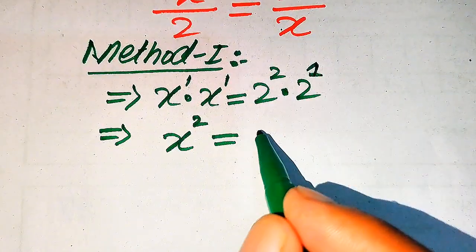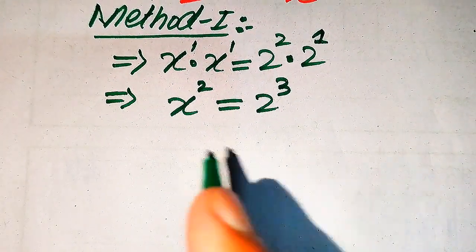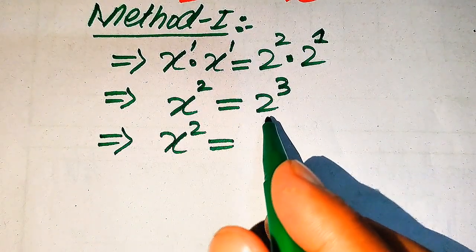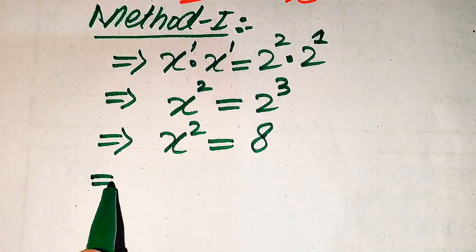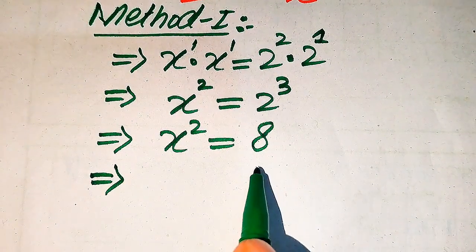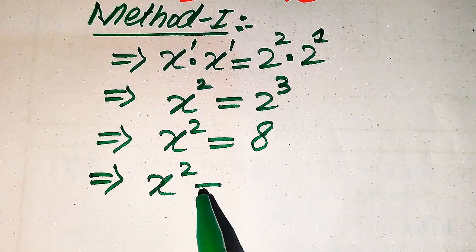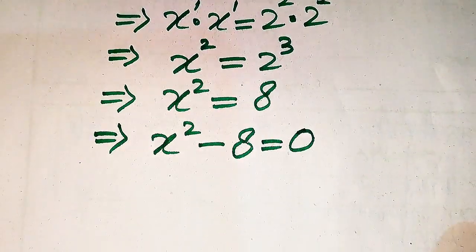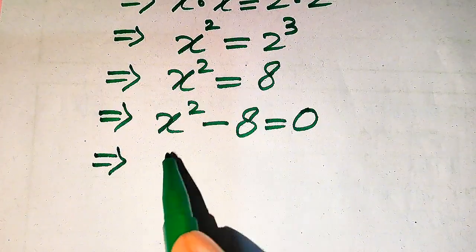Similarly, on the right hand side the bases are the same so we add the exponents, giving us 2 cubed. We know that 2 cubed equals 8. So we move 8 to the left hand side — it becomes minus 8 — and the whole equation is x squared minus 8 equals 0.